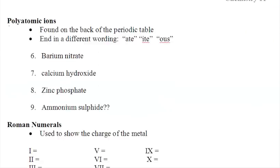We'll try the rest of those in class tomorrow. Moving on. Polyatomic ions. Those are found on the chart on the back of your periodic table. They're ions that are always in groups together. They have different endings like ates and ites and ous. So barium nitrate, you know it's a polyatomic because it ends in ate.